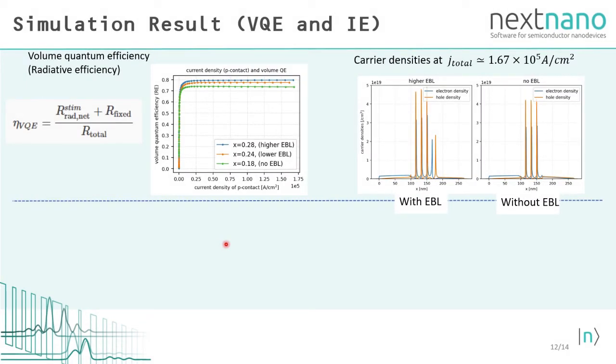The left graph shows the volume quantum efficiency. By increasing the current density, this efficiency is also increased. The introduction of blocking layers also improves this efficiency. The difference in carrier density distributions affects this improvement.